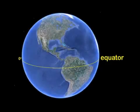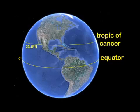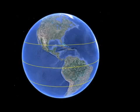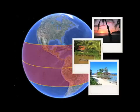The equator lies at zero degrees, halfway in between the north and south poles. There are several other unique lines of latitude. The Tropic of Cancer lies at 23 and a half degrees north, and the Tropic of Capricorn lies at 23 and a half degrees south. The part of the Earth that lies between these lines is called the tropics — known for its hot temperatures, heavy rainfall, and dense jungle.